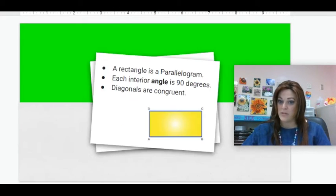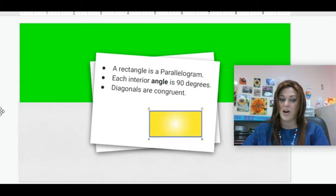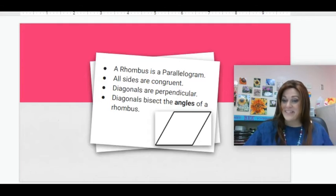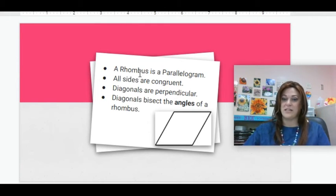A rectangle is a parallelogram, so all those properties apply - the parallelogram properties - plus each angle is 90 degrees and the diagonals are exactly the same, they're congruent.